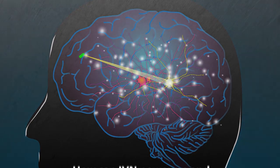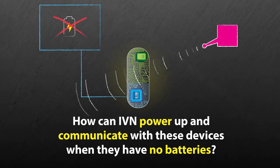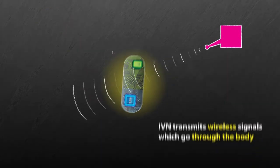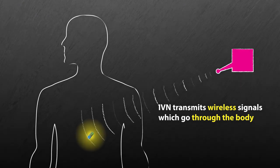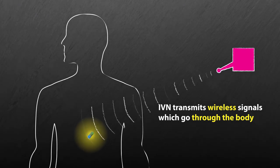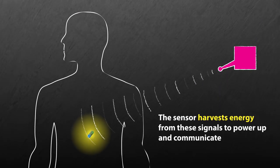So, how can IVN power up and communicate with these devices when they have no batteries? When IVN transmits a wireless signal, the signal goes through the body and reaches the tiny implanted sensor. The sensor harvests energy from these signals to power up and communicate.